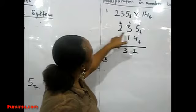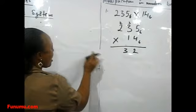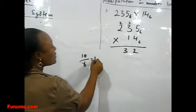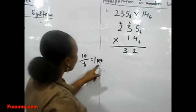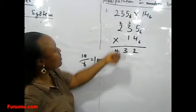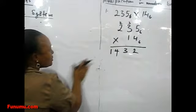So we'll write that remainder, carrying 2 to this point. Now 4 times 2 is 8, 8 plus 2 is 10. We also go and divide 10 by 6. 10 divided by 6, you have 1 remainder 4. So you have 4. Now this 1, we're supposed to take it further, but there's no other number, so bring it down. You have 1, 4, 3, 2.